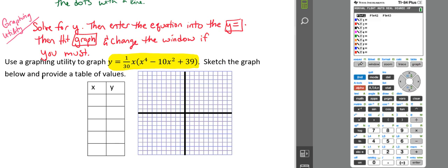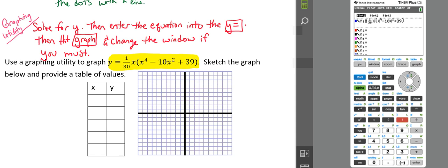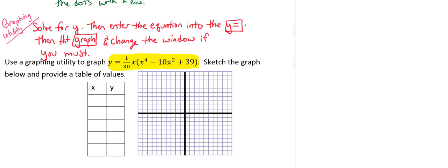So we're going to go ahead and make a fraction here. So 1 over 30 times x, parentheses, x raised to the 4th minus 10x squared plus 39. So we're going to create our table of values first. So our standard table of values generally starts with negative 2, negative 1, 0, 1, and 2.